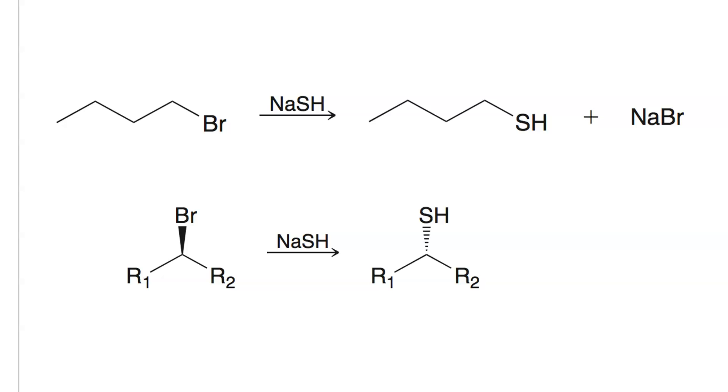If you have a secondary alkyl halide and you're producing a chirality center, you will get inversion.